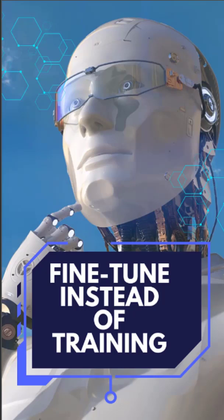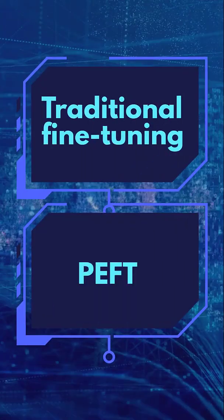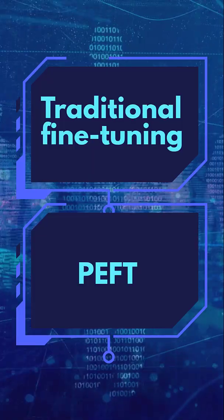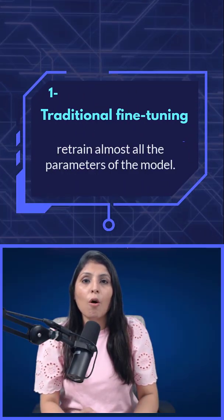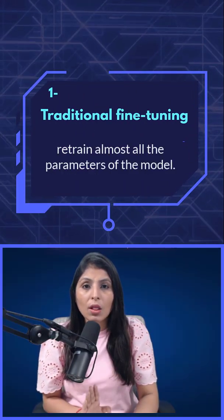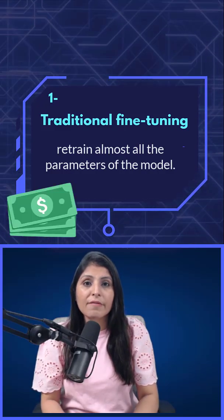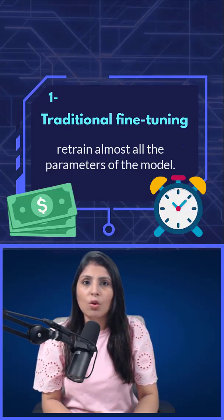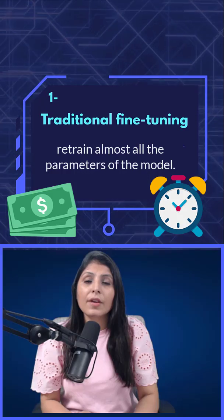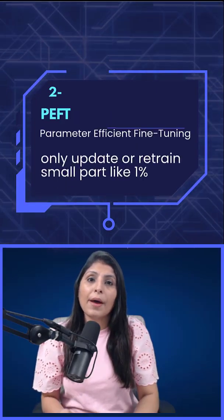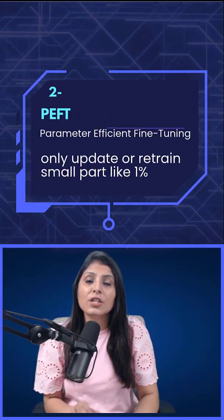There are two ways to fine-tune. The first one is traditional fine-tuning, where we retrain almost all the parameters of the model — but again, this method is super expensive and it takes a lot of time. The second way is PEFT, which stands for Parameter Efficient Fine-Tuning.